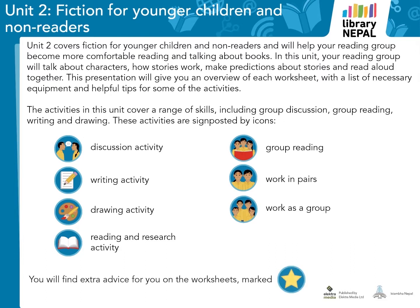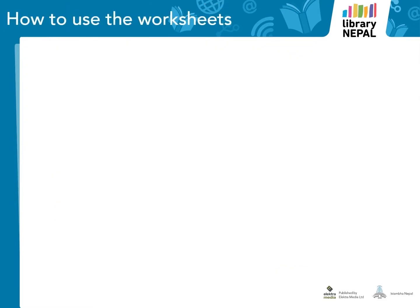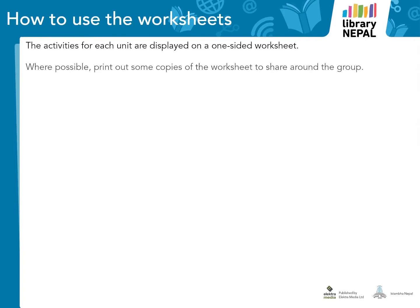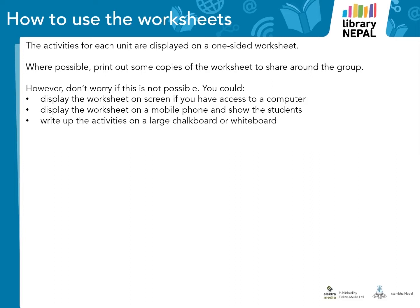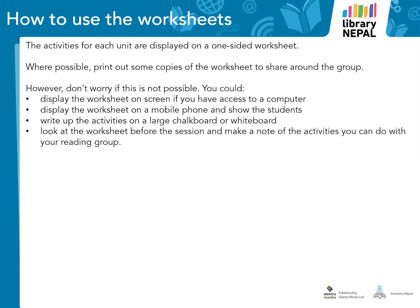The star icons are particularly important, as they mark out helpful tips that will support you when leading the sessions. The activities for each unit are displayed on a one-sided worksheet. Where possible, print out some copies of the worksheet to share around the group. However, if this is not possible, you could display the worksheet on screen if you have access to a computer, display it on a mobile phone and show the students, write up the activities on a large chalkboard or whiteboard, look at the worksheet before the session and make a note of the activities you can do, or simply read through the worksheets yourself to get some good ideas for inventing your own learning activities with your class or reading group.